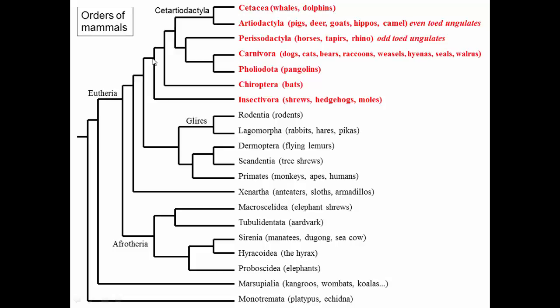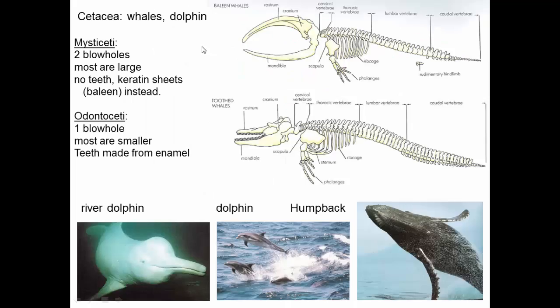This is a monophyletic group — all the descendants from a common ancestor. It would be hard to imagine what that ancestor looked like, because its descendants include whales, lions, and insectivores like hedgehogs. The ancestor of all these taxa — who knows what that looked like.